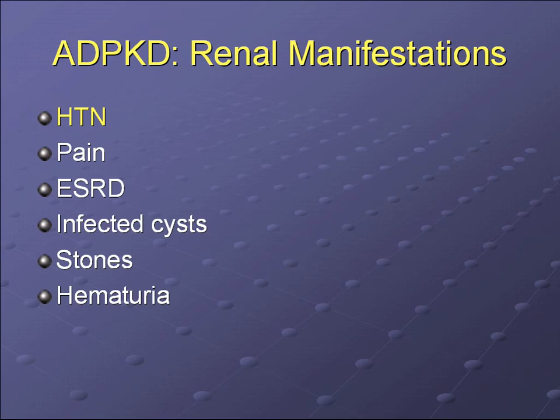The renal manifestations of polycystic kidney disease include hypertension, pain, end-stage renal disease, infected cysts, stones, and hematuria.